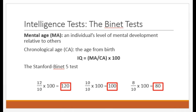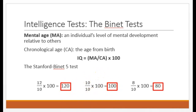By contrast, let's say a 10-year-old child takes the test and scores only as well as an average 8-year-old. 8 divided by 10 times 100 equals 80. So this child would have an intelligence quotient of 80. By the way, this is also why the average IQ score is always 100 and will always be 100 — it will be, by definition, the average score of a person that age.